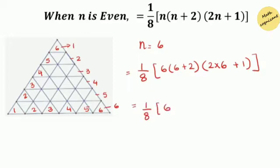1 over 8, 6 plus 2 equals to 8, and we have 6 times 2 gives you 12 plus 1 equals to 13. So always follow the rules of order of operations. Then 1 over 8, 6 times 8 equals to 48.